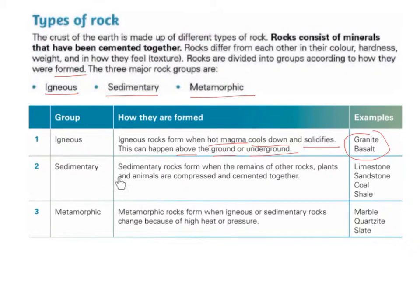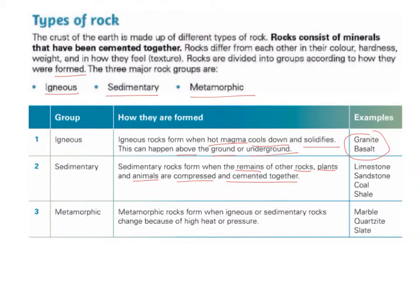Sedimentary rocks form when the remains of other rocks, plants and animals are compressed and cemented together. Examples of sedimentary rocks are limestone, sandstone, coal and shale. The two that we will learn about in detail are limestone and sandstone.